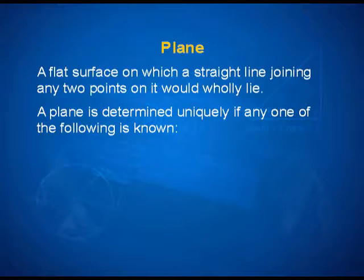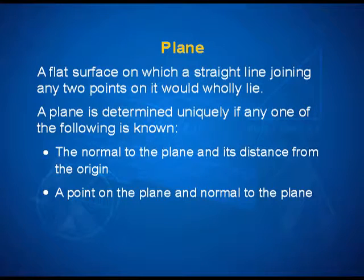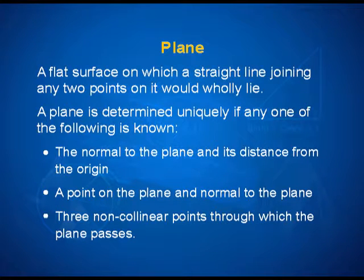The first condition is if I know the normal to the plane and its distance from the origin. The normal to the plane is a vector which is perpendicular to the plane. The second possibility is if I know a point on the plane and the normal to the plane. The third possibility is if I know three non-collinear points through which the plane passes. Each of these gives rise to an equation of the plane that we are getting ready to learn.